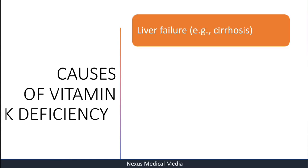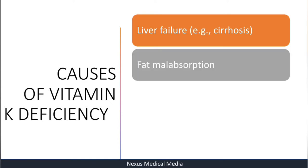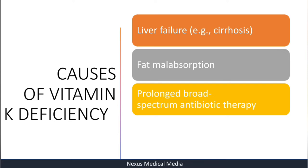What causes Vitamin K deficiency? Number one is liver failure — for example, liver cirrhosis. Number two is fat malabsorption. Remember, Vitamin K is fat-soluble, so it is absorbed alongside dietary fats. If there is malabsorption, the patient will be deficient in fat-soluble vitamins A, D, E, and K.